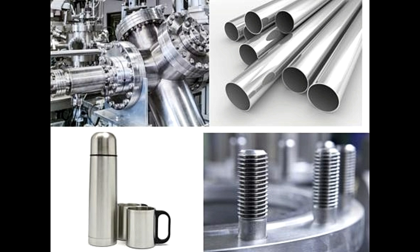High-speed tool steel includes tungsten, vanadium, and molybdenum steel alloys that are hard and can retain this hardness when subjected to high temperatures. This makes it ideal for use in high-speed machinery and in tools such as drills, punches, reamers, taps, saws, etc. Hot work tool steel includes chromium, tungsten, and molybdenum alloys that can withstand heat for prolonged periods of time. It is used to make tools involved in forging, casting, extrusion, hot shearing, and punching blades.